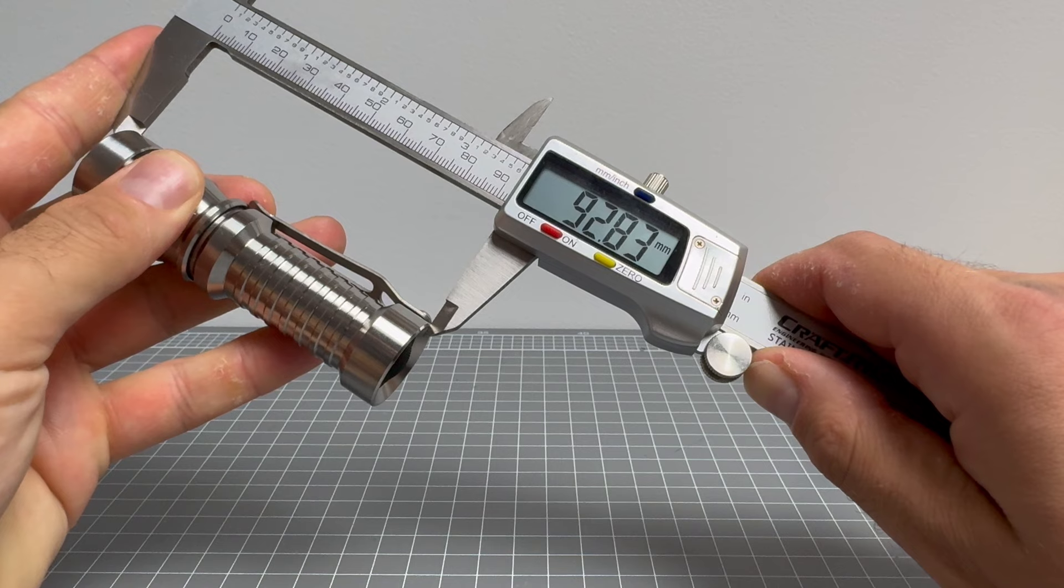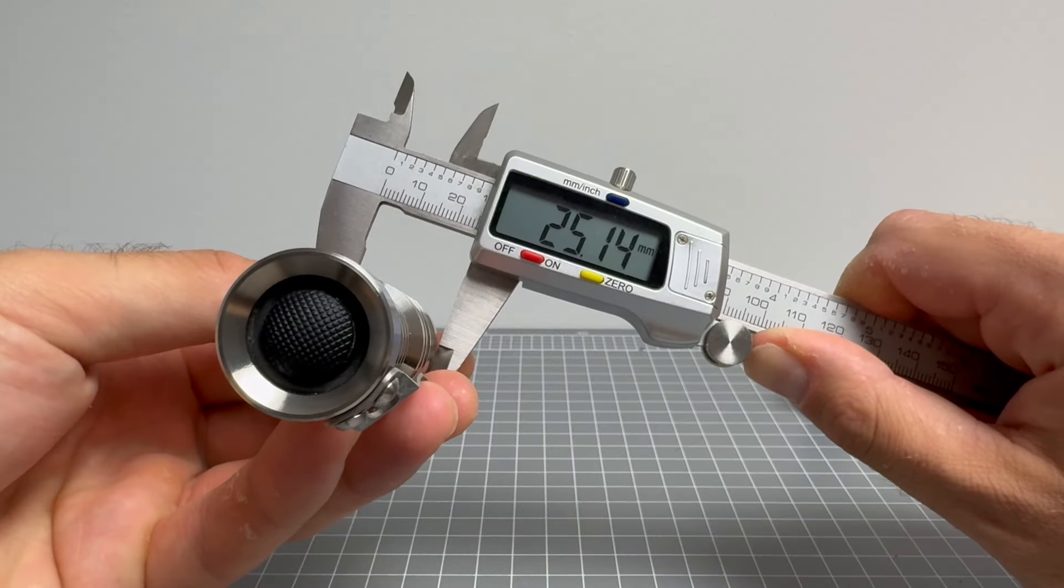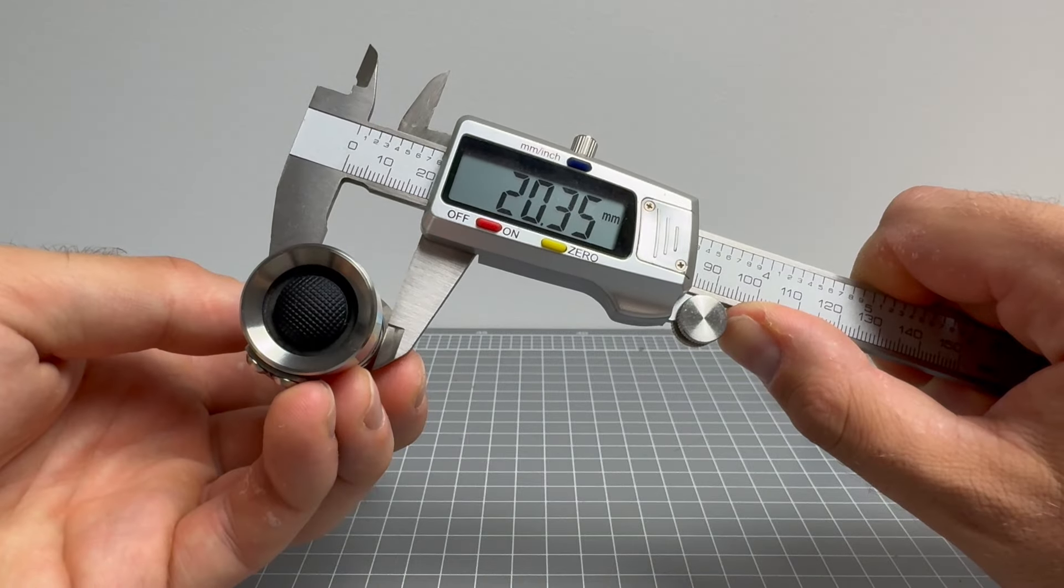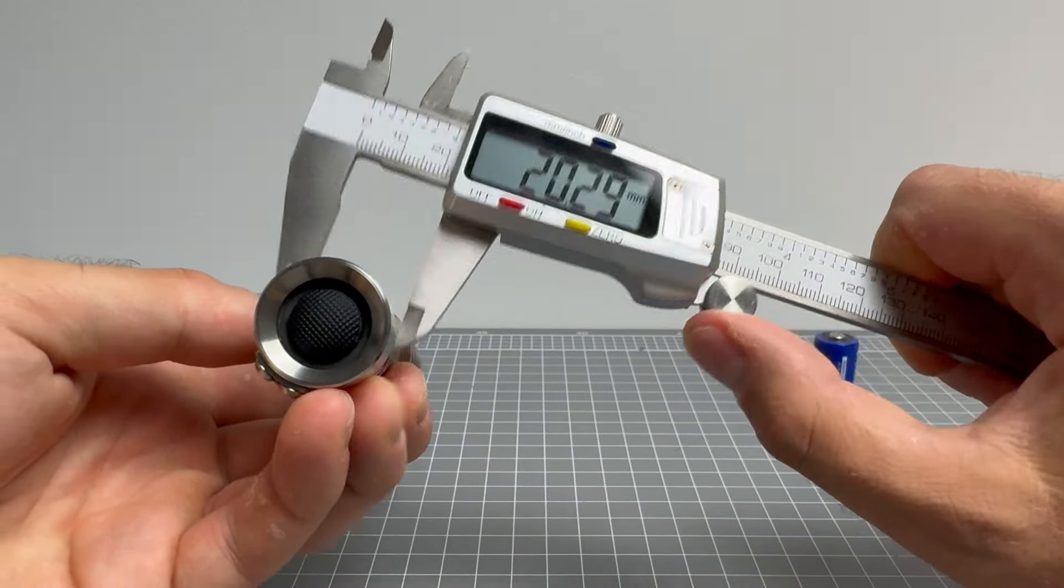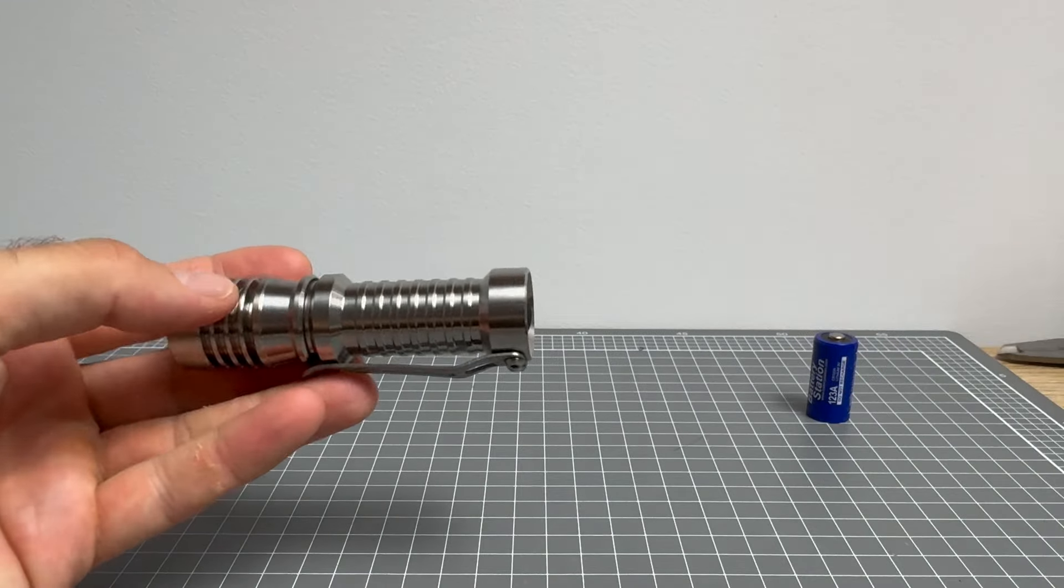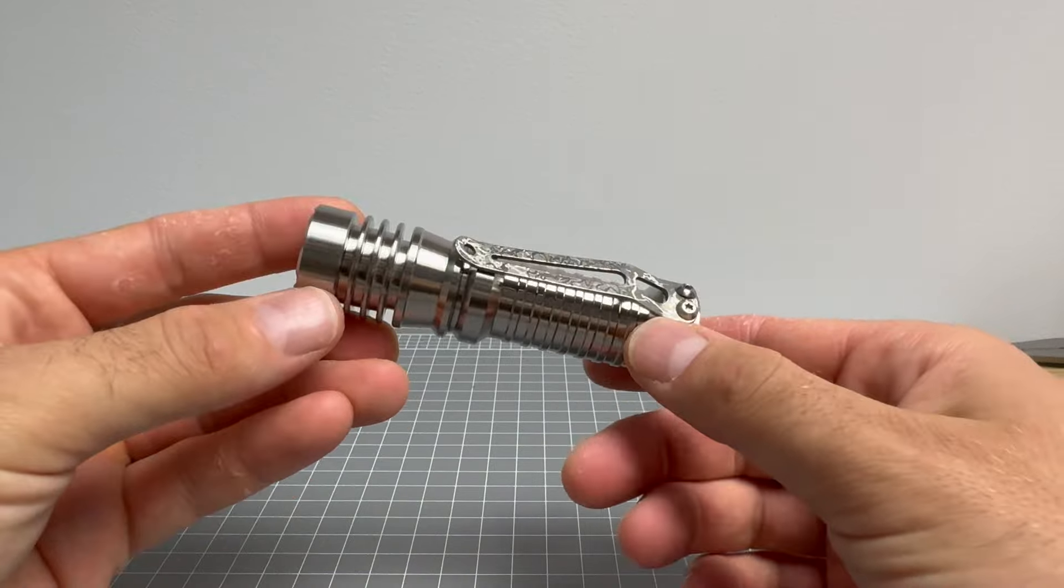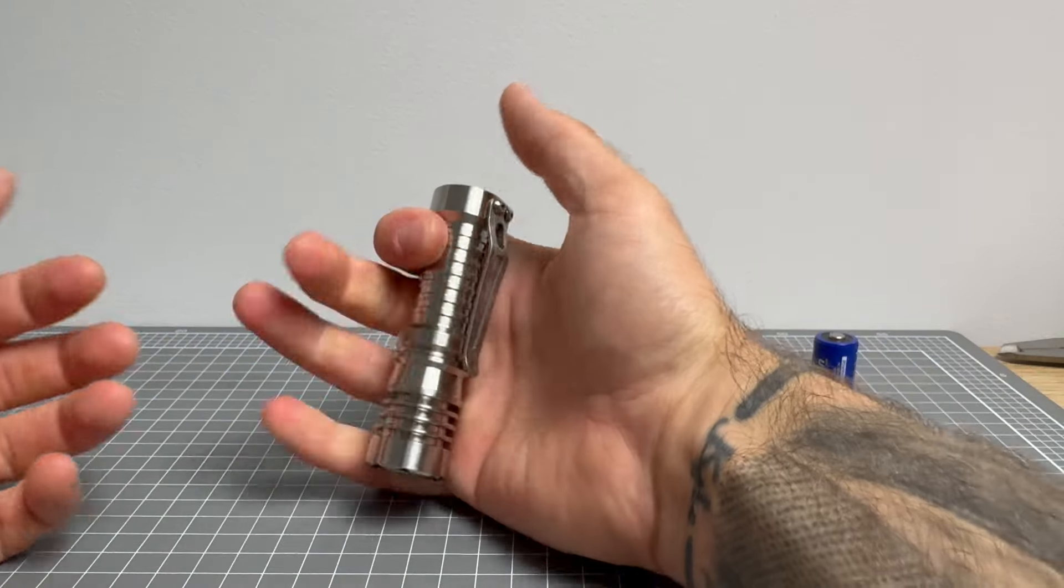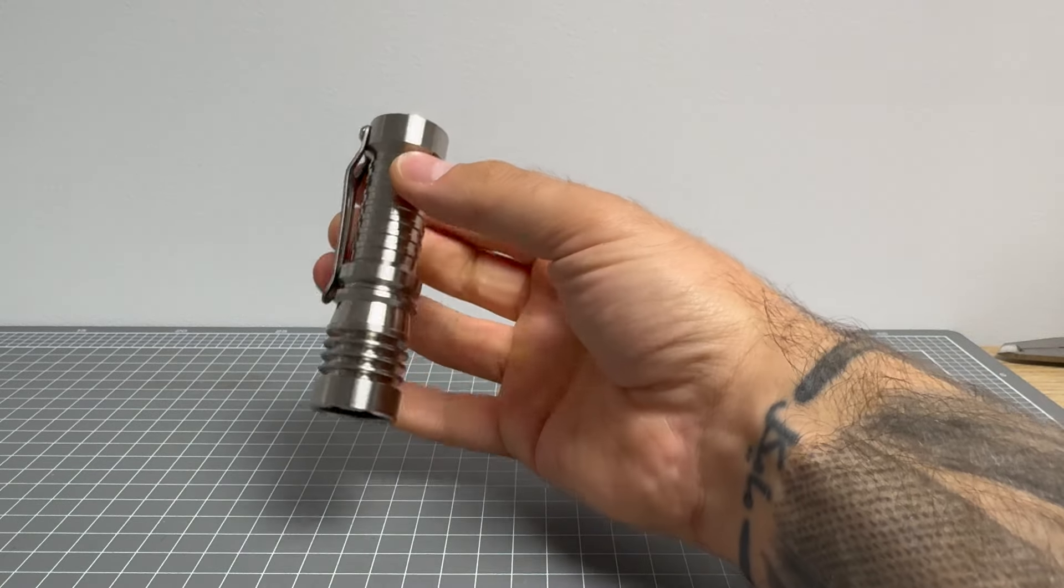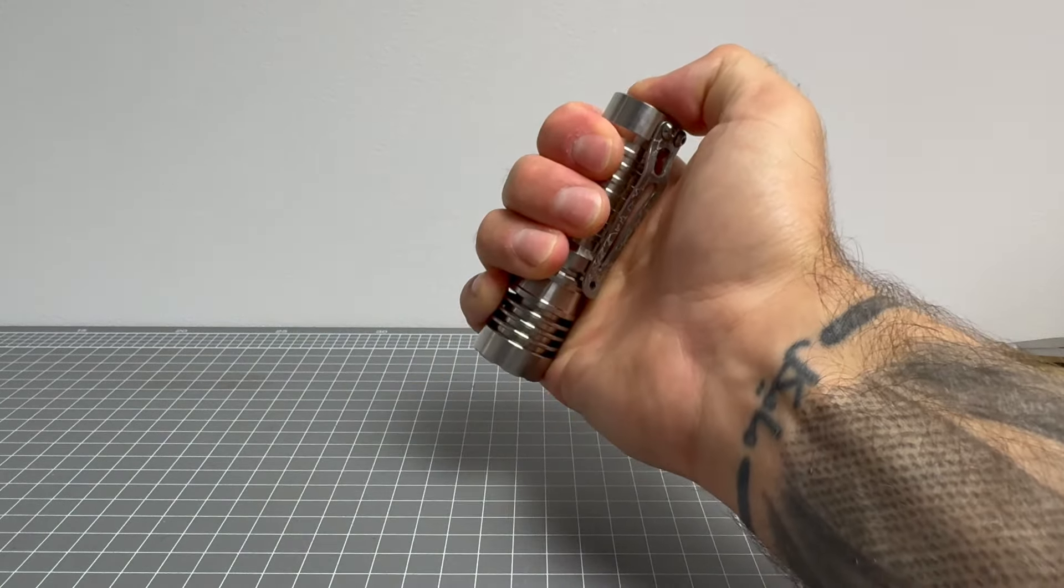So, 92.82 millimeters long. 25.14 millimeters wide is the head. 20.35 millimeters is the body. 25.15 millimeters is the tail. So, the dimensions are fantastic. They, I mean, look at it in the hand. They are fantastic. They just feel beautiful. Very, very nice. Look at that.